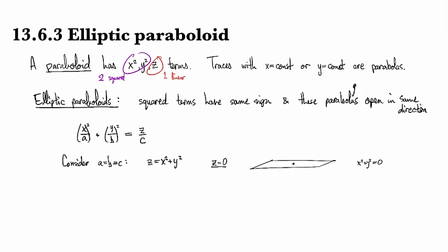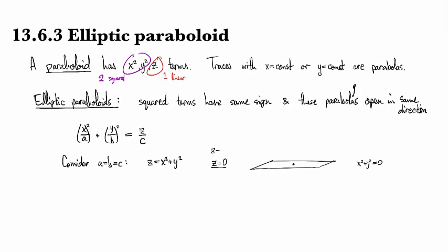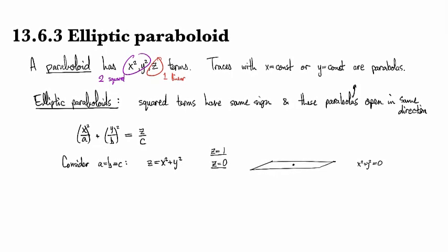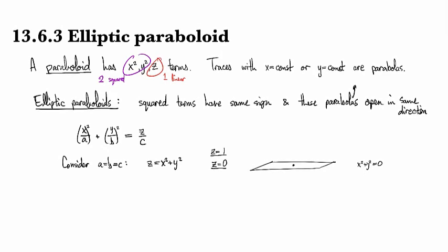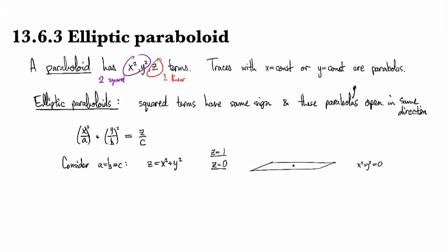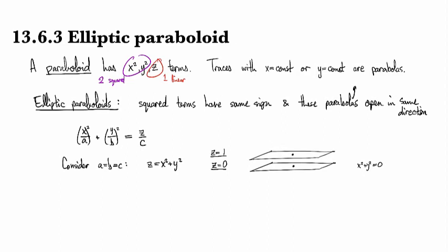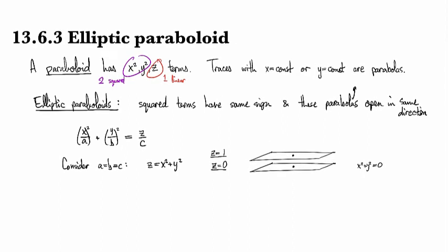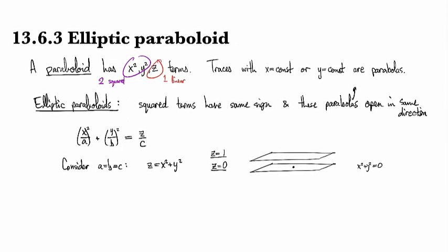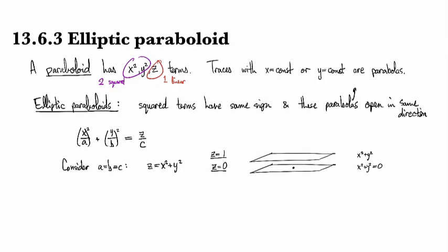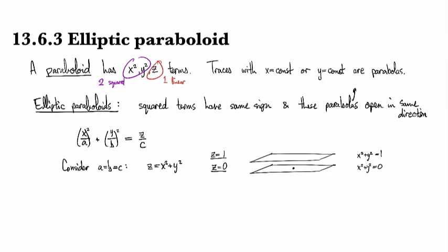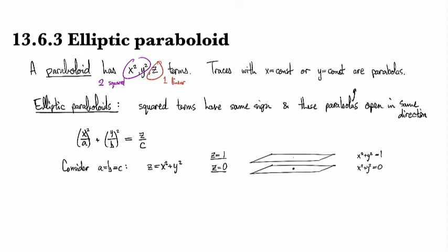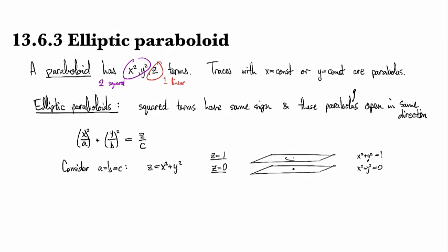And then let's go upstairs a little bit and look at z equals 1. And so at z equals 1, I'll go up a notch right here. And now I'm going to be looking at x squared plus y squared equals 1. And so that's a unit circle.